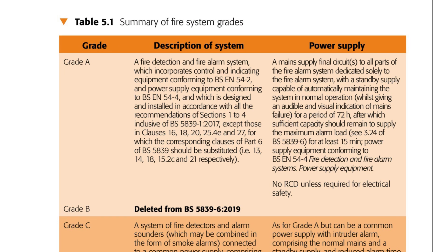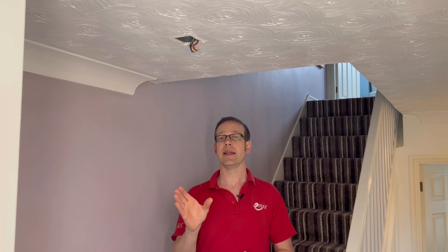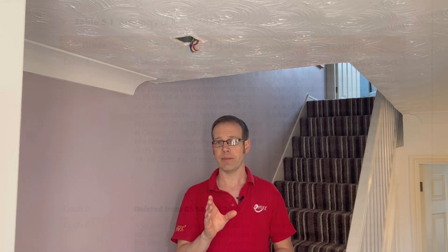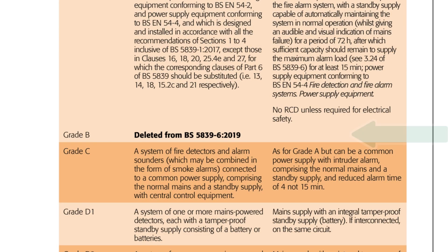The power supply to a Grade A alarm should only feed the fire alarm and nothing else, and the system should have a backup that can keep the alarm operable for at least 72 hours, after which sufficient capacity should remain to supply the maximum alarm load for at least 15 minutes. So if a detector was triggered at the very end of 72 hours of running on battery backup, the panel should still be able to sound all connected alarms for at least 15 minutes. It's also recommended that this grade of system has no RCD protecting the supply cable unless necessary for electrical safety.